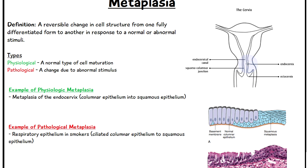Looking at the diagram, we have the endocervix and the ectocervix, with the region in between known as the transformation zone. The endocervix is lined by columnar epithelium and the ectocervix is lined by squamous epithelium. During puberty, the transformation zone moves, which exposes the endocervix to the harsher, more acidic environment of the vagina. The columnar epithelium then undergoes metaplasia and turns into squamous epithelium — this is a normal physiological response and part of the aging process.